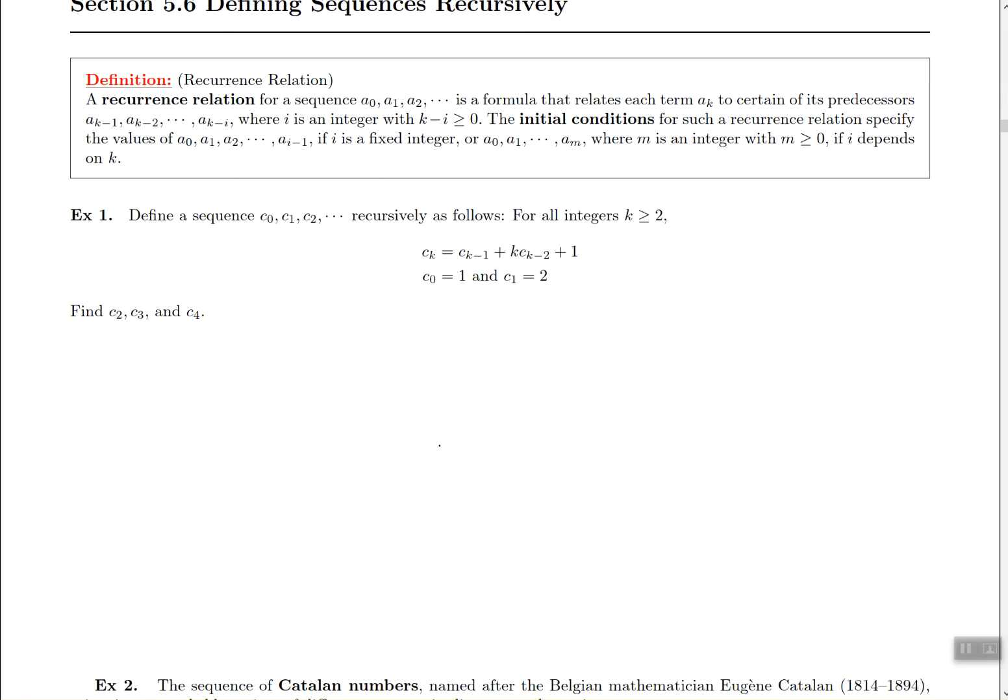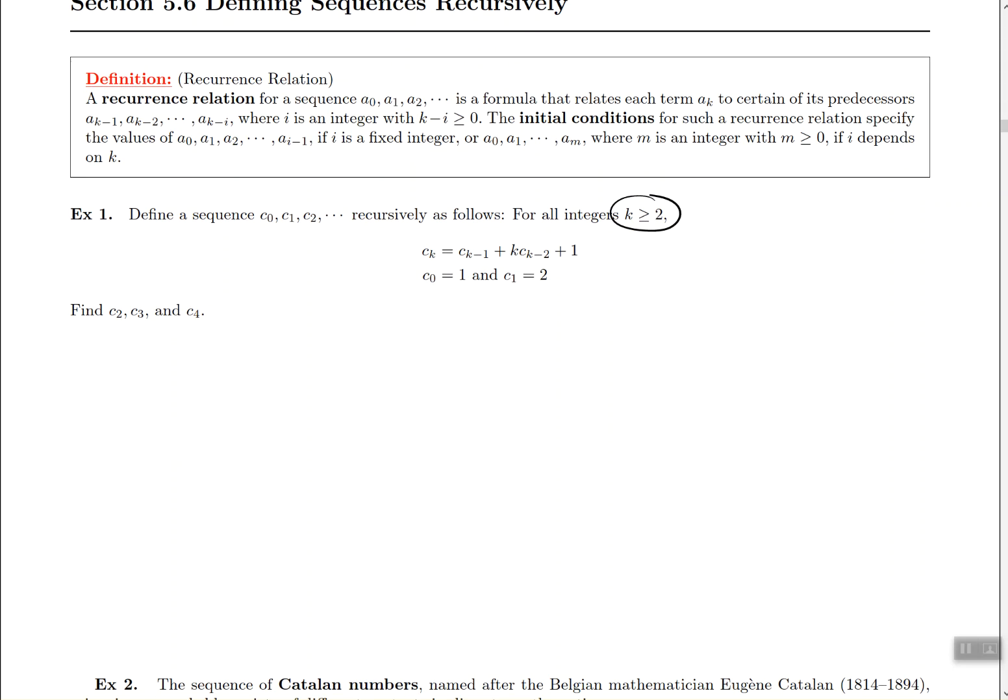So it says find C2, C3, C4. This formula works for any integers where k is greater than or equal to 2. They already told us C0 equals 1 and C1 equals 2. So they told us when k is 0 you get the term, when k is 1 you get that new term.